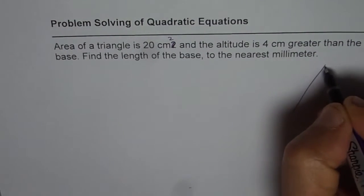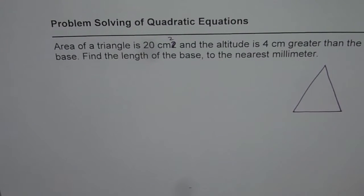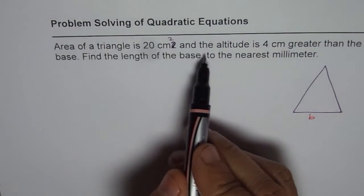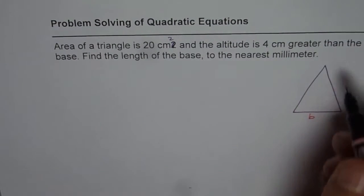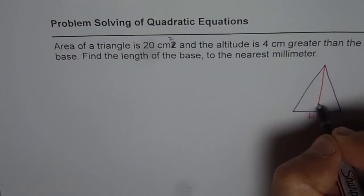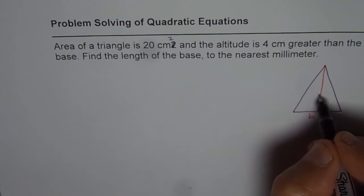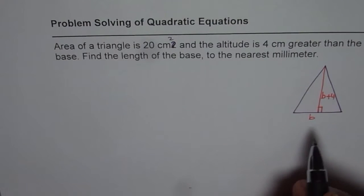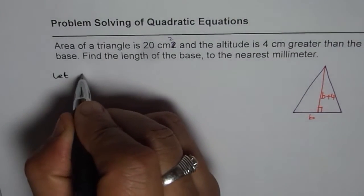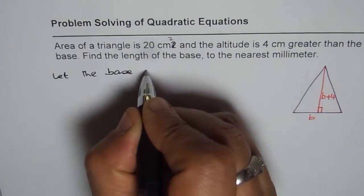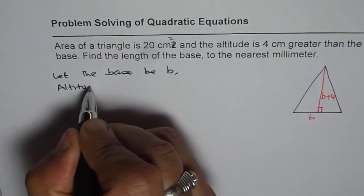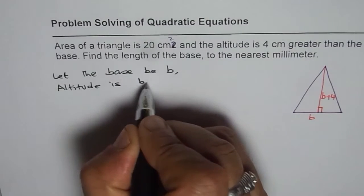Let's construct a triangle here and let us say that the base is B. It says the area of the triangle is 20 centimeters squared and the altitude is 4 centimeters greater than the base. So this altitude will be equal to B plus 4. So let the base be B, then the altitude is B plus 4.